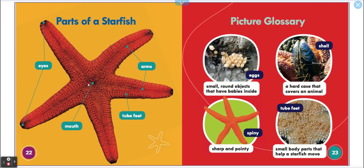We have eyes on the tips — remember, the mouth is in the center, then the arms, the tube feet. Picture glossary: eggs — small round objects that have babies inside, and the babies hatch from the eggs. Shell — a hard case that covers an animal. Spiny — sharp and pointy. Tube feet — small body parts that help a starfish move.